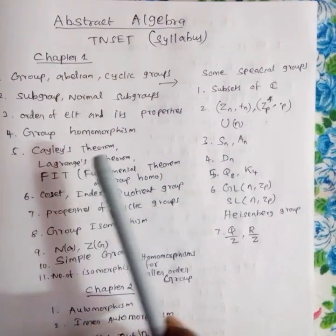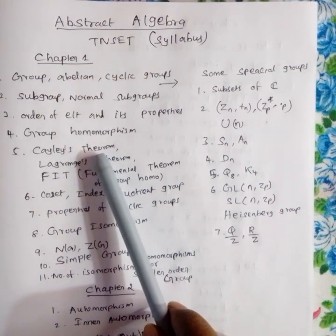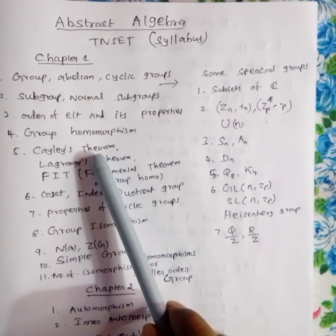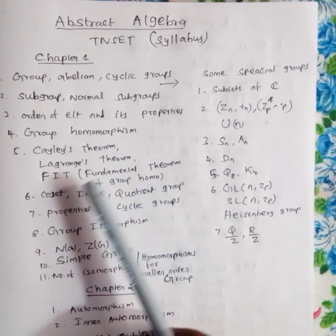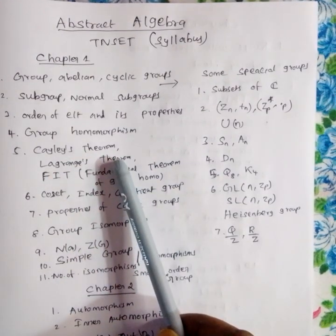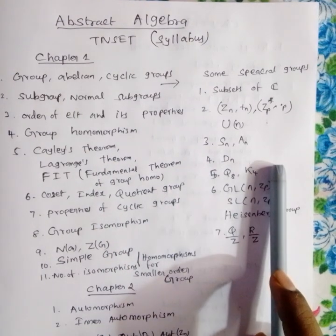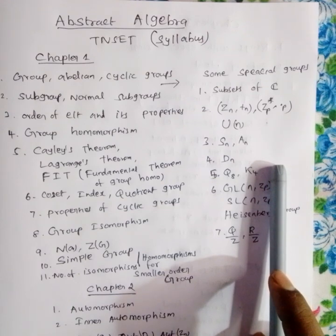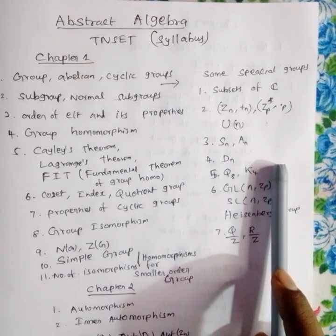Every group is isomorphic to a subgroup of a permutation group. This is the statement of Cayley's theorem. The Lagrange theorem states that every finite subgroup's order divides the order of the group G, where G is a finite group.